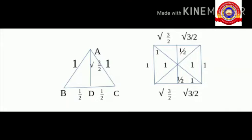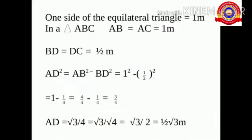One side of the equilateral triangle is equal to 1 meter. In triangle ABC, AB is equal to AC is equal to 1 meter, and BD is equal to DC is equal to half meter. Hence, AD² is equal to AB² minus BD², which is equal to 1² minus (1/2)², that is 1 minus 1 by 4, which is equal to 4 by 4 minus 1 by 4, equal to 3 by 4.